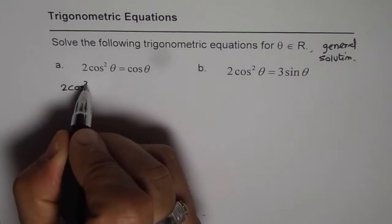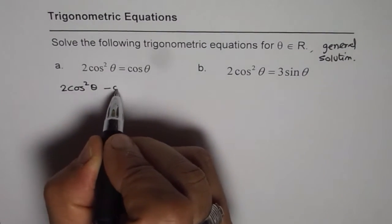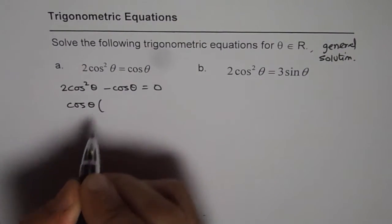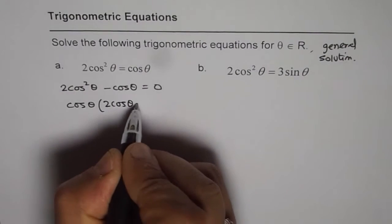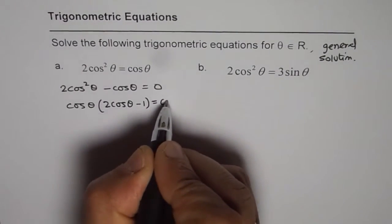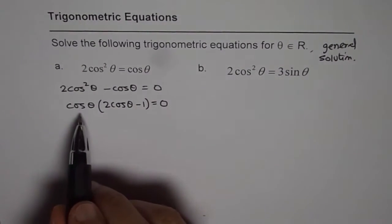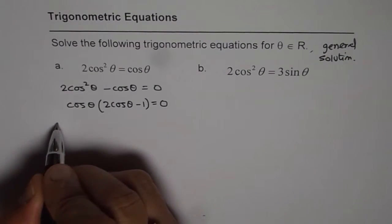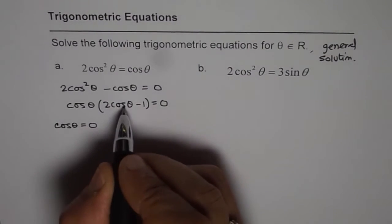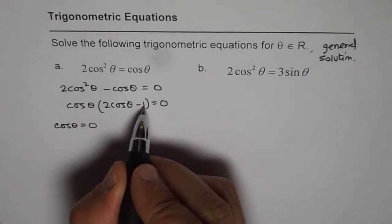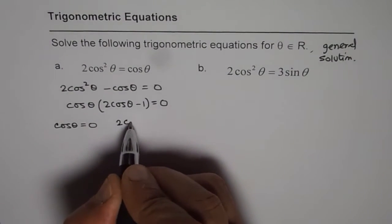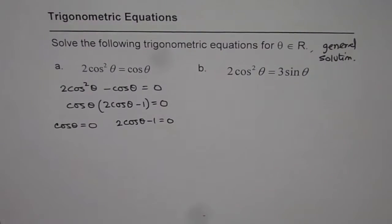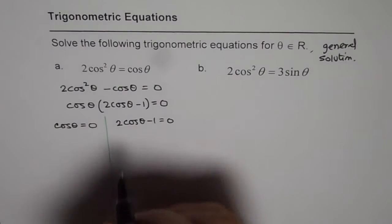So we have 2 cos squared theta minus cos theta equals 0. Now factor: we get cos theta times (2 cos theta minus 1) equals 0. This gives two possible sets of solutions. One is cos theta equals 0, and the other is 2 cos theta minus 1 equals 0, meaning cos theta equals one half.